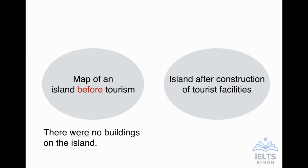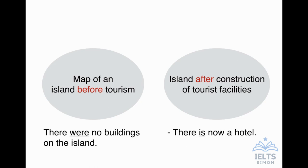Looking at the map showing before and after — the island question — it's similar, but we might have a difference in verb tenses. When looking at the map of the island before tourism, it's past simple again because this was in the past — for example, 'there were no buildings on the island.' However, when we look at the island after construction of tourist facilities, we can use two tenses: present simple or present perfect. For example, 'there is now a hotel' (present simple) or 'a hotel has been built' (present perfect passive), because this is what we see on the island now.